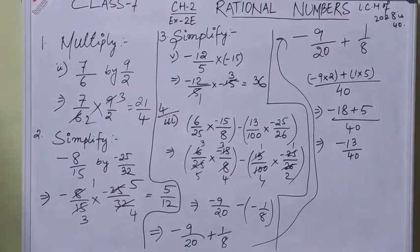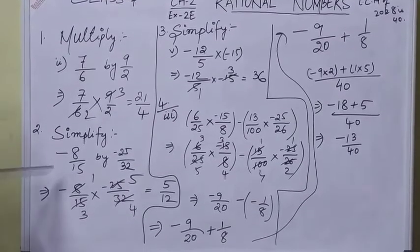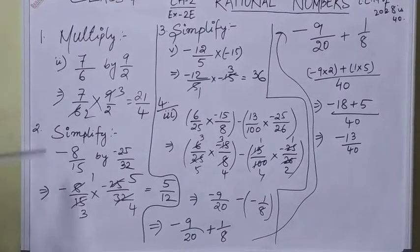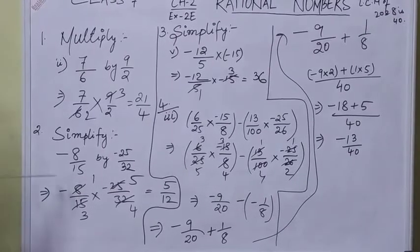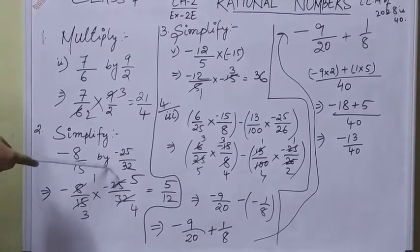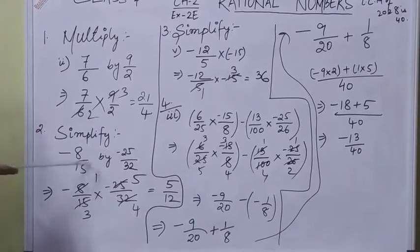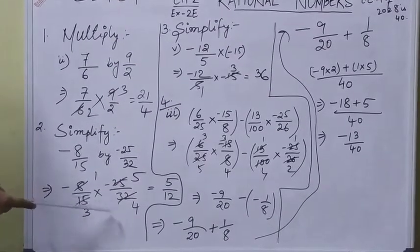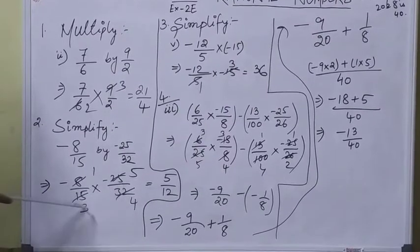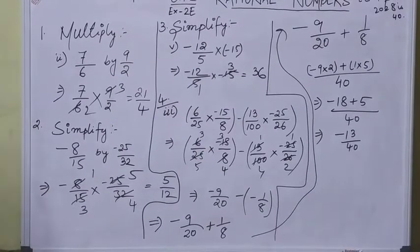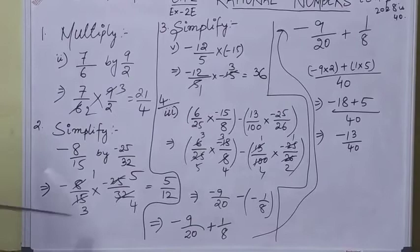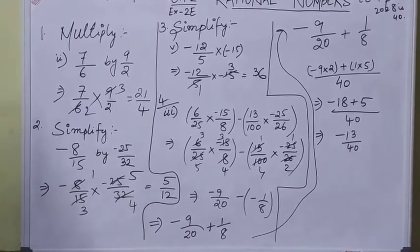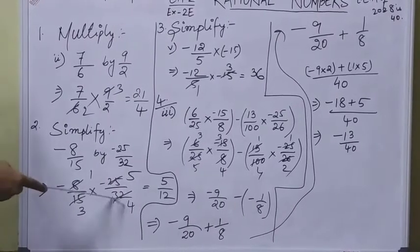Now let's start simplifying. We have to simplify -8/15 by 25/32, similar to question number 1. When we multiply -8/15 times 25/32, 25 and 15 have a common factor of 5, so 5×3 is 15, 5×5 is 25. And 8 and 32 are divisible with common factor 4, or you can divide them by 8 itself.